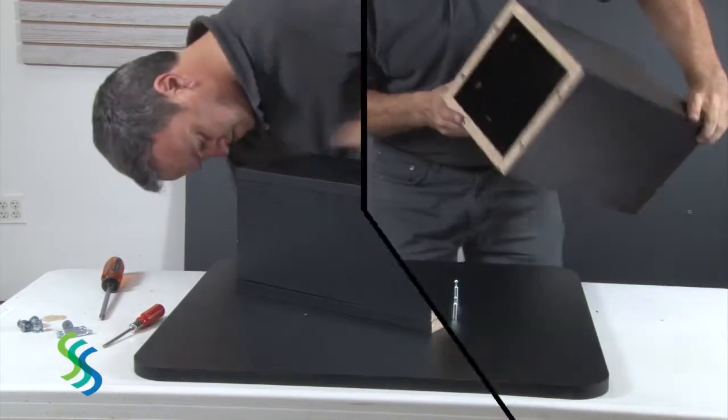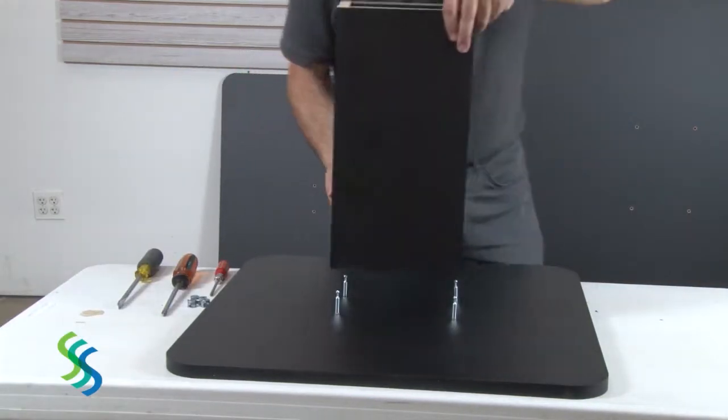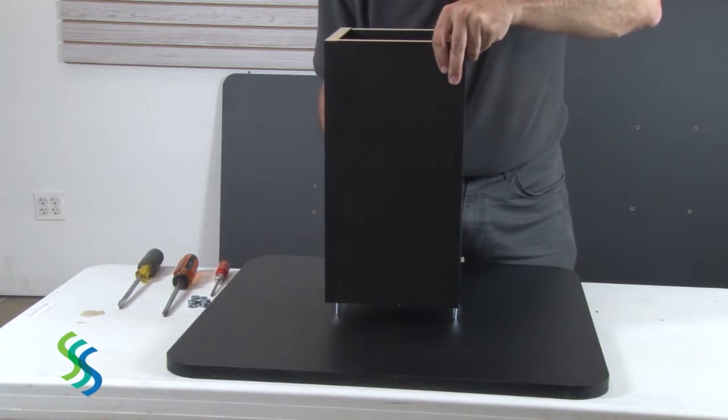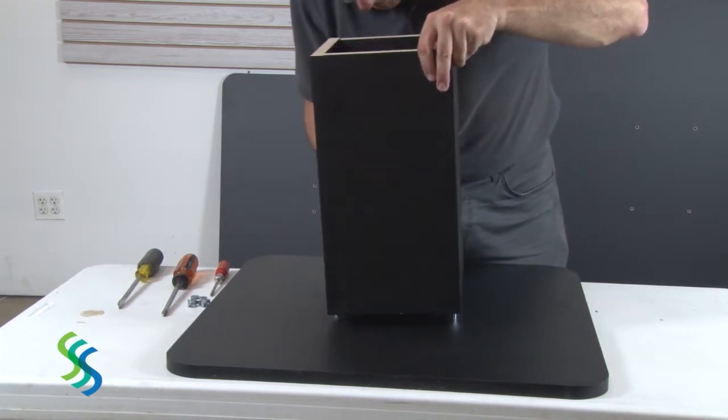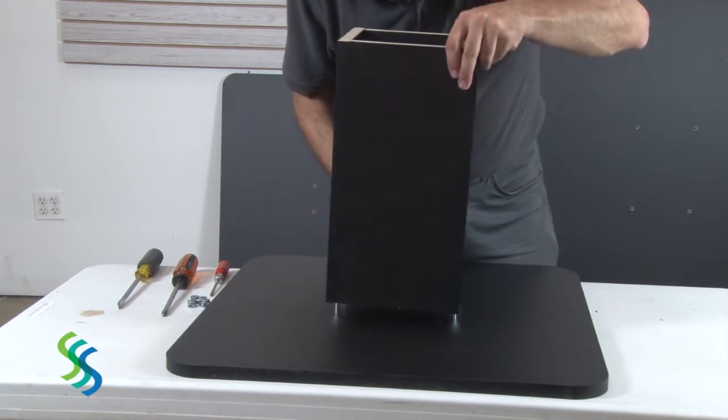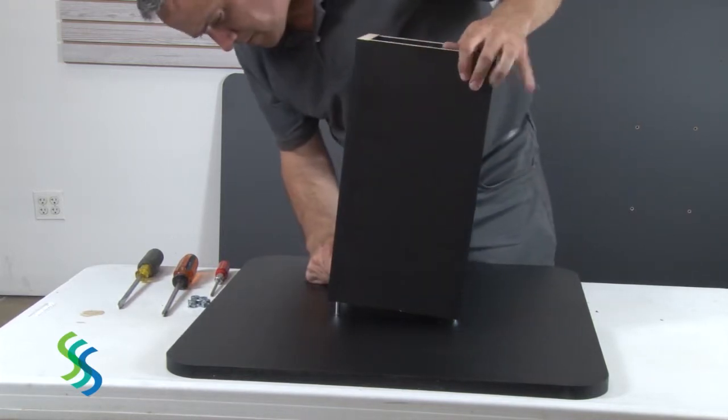Use cam locks to attach these two pairs to each other to create the top stand. Lower the adjoining panel onto the lock screws, then secure them with the cam locks. Screw four cam lock screws into position on the bottom of the top tier.